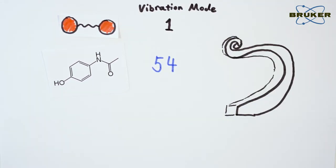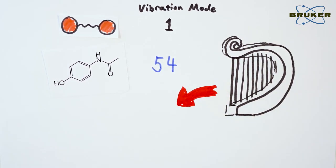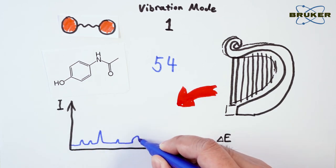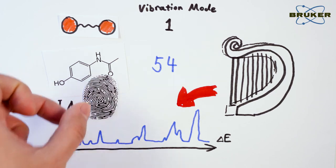Imagine plucking a harp with 54 strings and capturing the frequency of each string at the same time. Just like this, we get a unique pattern that is very specific for the harp or, more relevant yet, the molecule we are looking at. This is called a spectroscopic fingerprint.